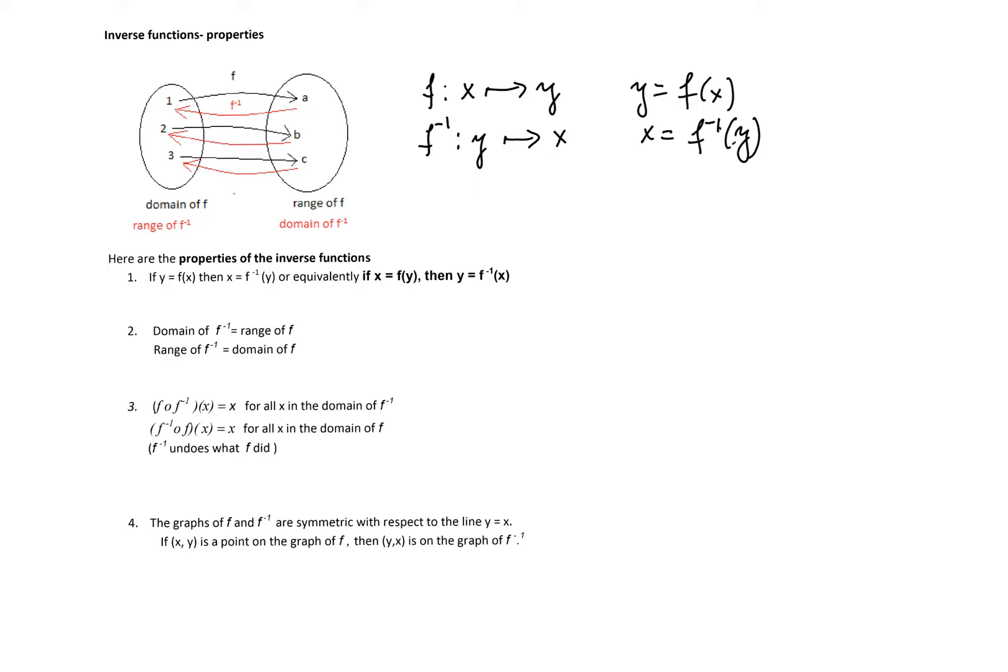Second property tells us relation between domains and the ranges. Again the diagram explains the relationship pretty well. Domain of the function f inverse is the range of the function f, and the range of the function f inverse, the set of outputs, is the domain of the function f.